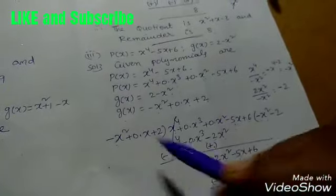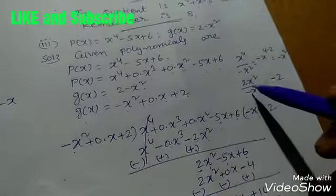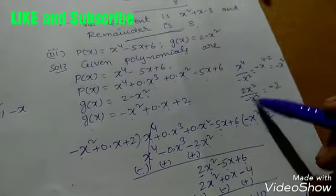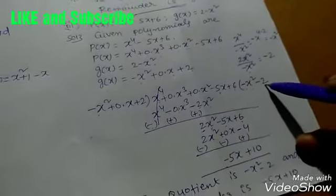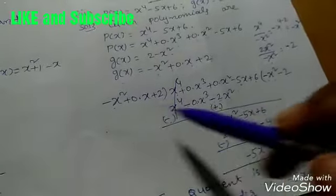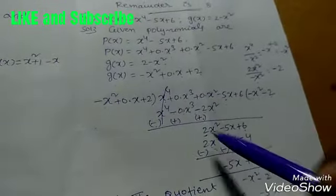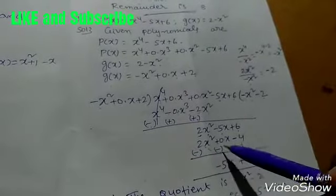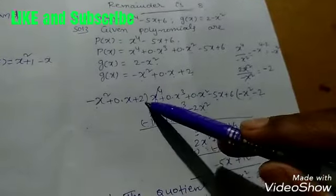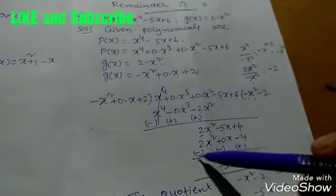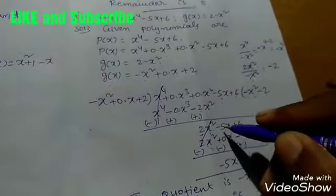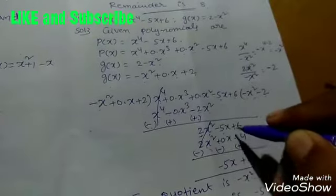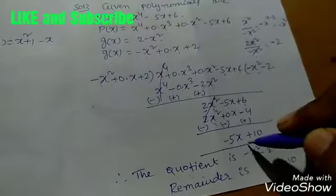Next term: 2x² ÷ (-x²) = -2 (x² cancels, minus moves to numerator). Multiplying -2 by (-x² + 0·x + 2): (-2)(-x²) = 2x², (-2)(0·x) = 0x, (-2)(2) = -4. Subtracting (signs change): 2x² - 2x² cancels, -5x + 0 = -5x, and 6 + 4 = 10. Therefore, the remainder is -5x + 10.